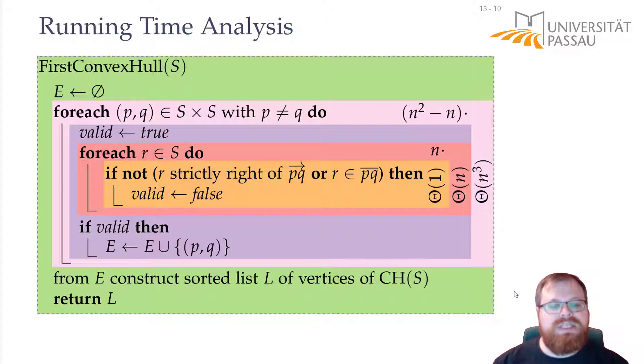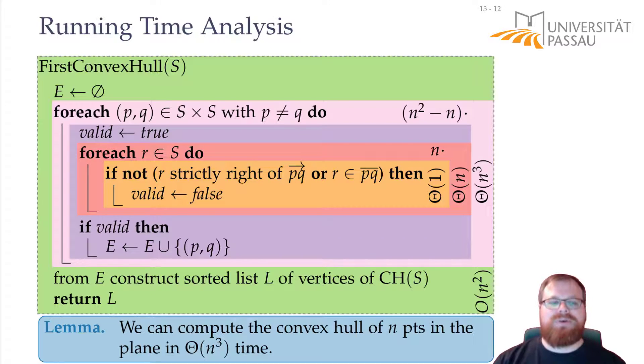How much time do we need to construct the sorted list? We could be smart and do it in Θ(n log n) time with some effort, but since we already spent Θ(n³) time here, why not do it in a stupid way? We just start with any vertex. For all its outgoing edges, test if they are in E. Then take the next vertex. For all outgoing edges, test whether they are in E, and go on. That means n times we have to look at n edges, so we take Θ(n²) time in total. So our first algorithm computes the convex hull of n points in the plane in total Θ(n³) time.